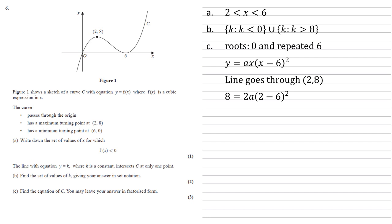Doing that gives us 8 = 2a(2 - 6)². Two minus six is minus four, which squares to give 16. So 8 = 32a, a = 1/4. Then we need to write this out as an equation. Putting this back into our equation, we've got y = (1/4)x(x - 6)².